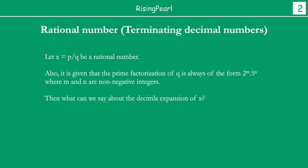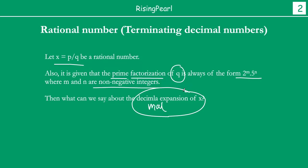Now, is the reverse true? That is, if we say that x is a rational number in the form p by q, and it is also given that the prime factorization of q is going to be of this form — 2 to the power m times 5 to the power n, where m and n are non-negative integers — then what can we say about the decimal expansion of x? This is kind of the opposite of what we saw in the last video.